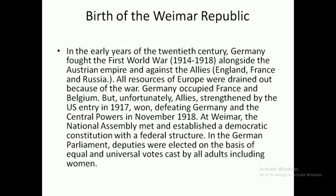At Weimar, the National Assembly met and set up a democratic constitution with a federal structure. This assembly was known as the Weimar Republic and it established a democratic constitution with a federal structure for Germany. In the German parliament, deputies were elected on the basis of equal and universal votes cast by all adults, including women.